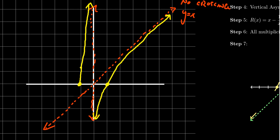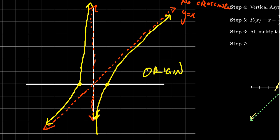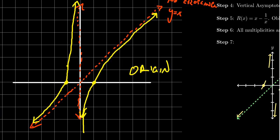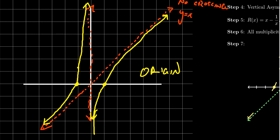If you take this graph and spin it a half turn, you get the exact same picture — confirming it's an odd function, symmetric with respect to the origin, exactly as we expected. Now comparing with the computer-generated image, we see we got the exact same picture, and we did it without any technology whatsoever. Using just the oblique asymptote, the vertical asymptote, the x-intercepts, and how the function behaves near those features, we were able to put together this complete picture.